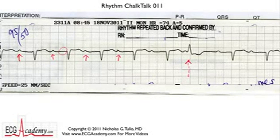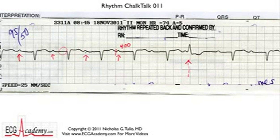So let's start to measure intervals. We take the beginning of the P wave on this heavy line, and you can see the PR interval is about 400 milliseconds. Pretty long, and since it's greater than 200, we'd call it a first-degree AV block. And it looks to be pretty constant.